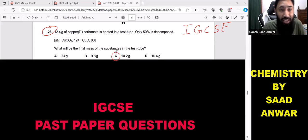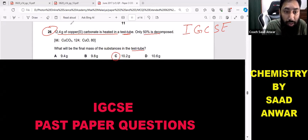12.4 grams of copper carbonate is heated in a test tube. Only 50 percent is decomposed. What will be the final mass of the substances in the test tube? So this is copper carbonate, CuCO3.